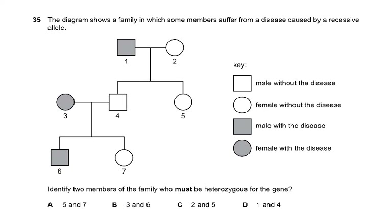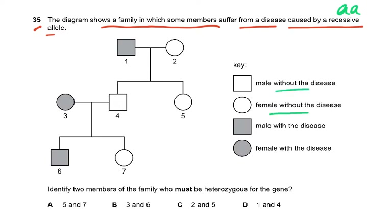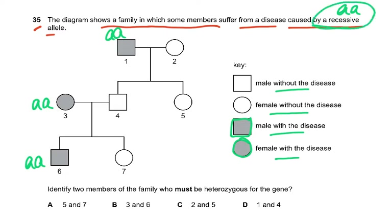Question 35: the diagram shows a family where some members suffer from a disease caused by a recessive allele — let's call it small 'a'. The shaded individuals have the disease, so they must be homozygous recessive (aa): persons 1, 3, and 6. The unshaded individuals either carry one or two dominant alleles.